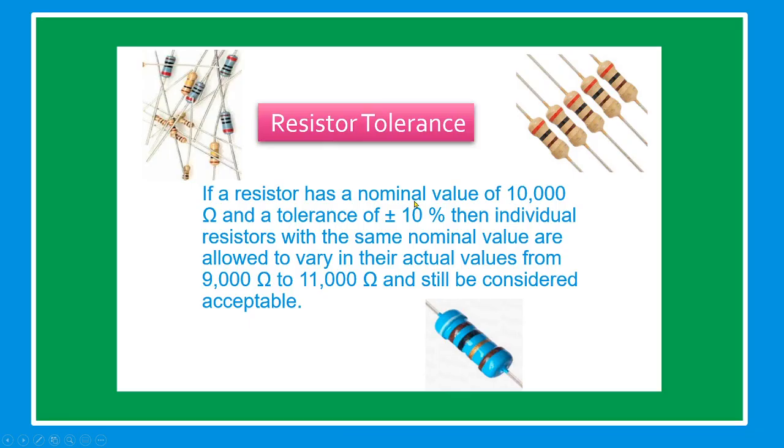Our next topic is resistor tolerance. If a resistor has a nominal value of 10,000 ohms and a tolerance of plus minus 10 percent, then individual resistors with the same nominal value are allowed to vary in their actual values from 9,000 to 11,000 ohms and still be considered acceptable.